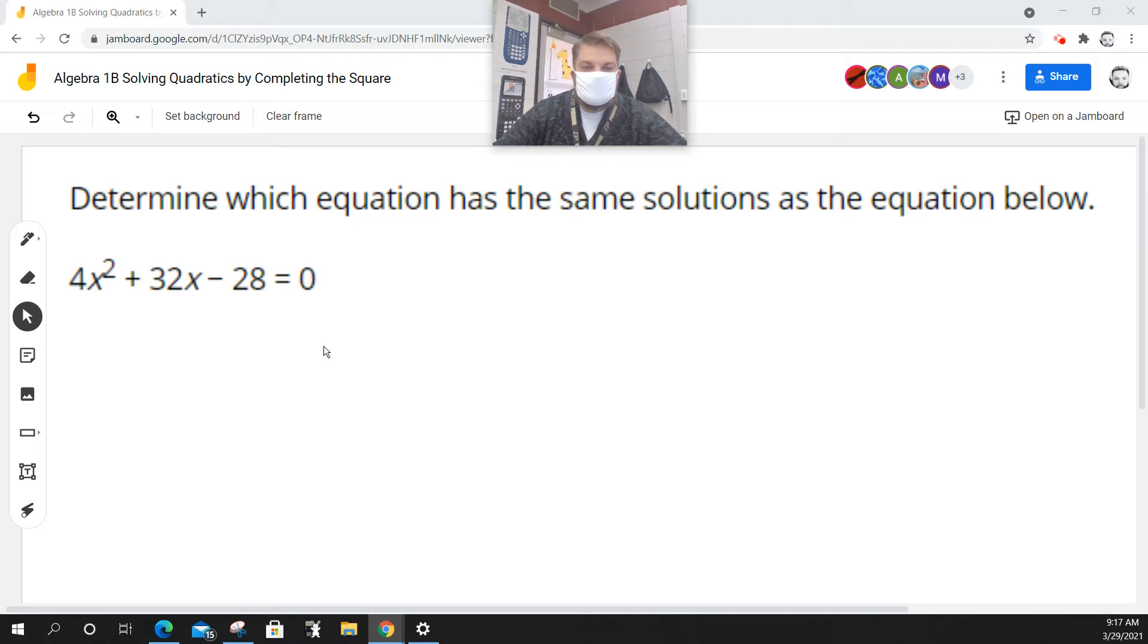First and foremost, I noticed that all these terms are divisible by 4. I've got 4x squared, that's divisible by 4, 32x is divisible by 4, and 28 is divisible by 4. So the first thing I'm going to do is divide every term by 4, like this.